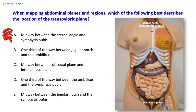The transpyloric plane can also be described as midway between the xiphoid process and the umbilicus. The xiphoid process can be palpated in the epigastric region. The umbilicus is a surface anatomical landmark, but it is unreliable in many patients because its location depends on the degree of distensibility of the abdomen. When using surface anatomical landmarks, it is better to rely on palpable bony landmarks rather than visible ones. The umbilicus and the areola of the nipple — especially in females — are not reliable.